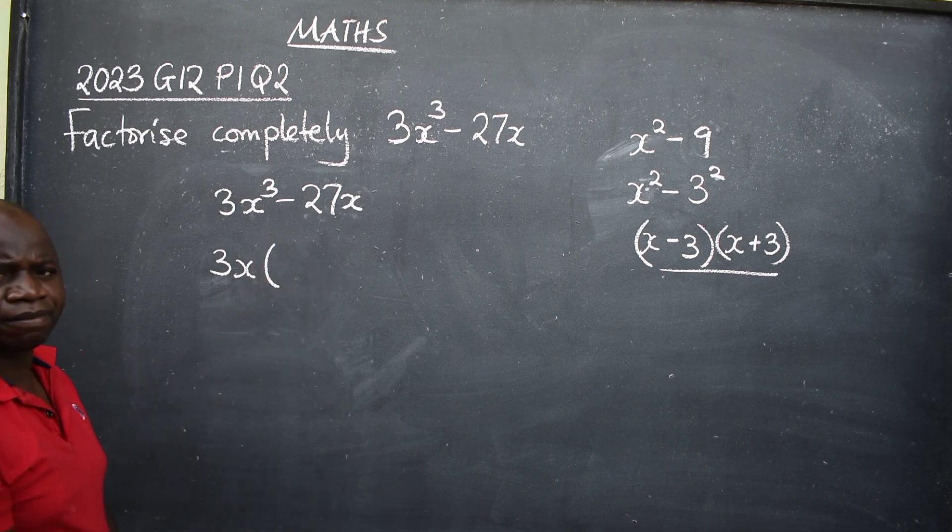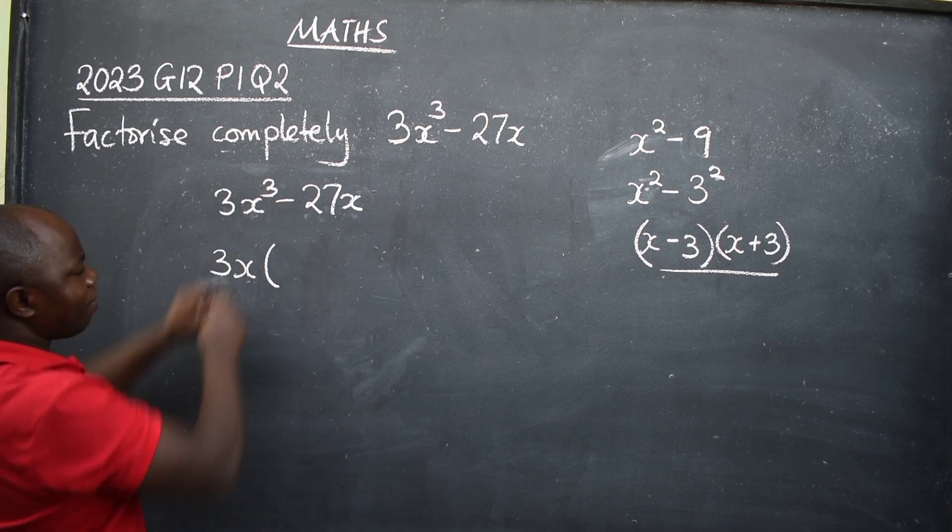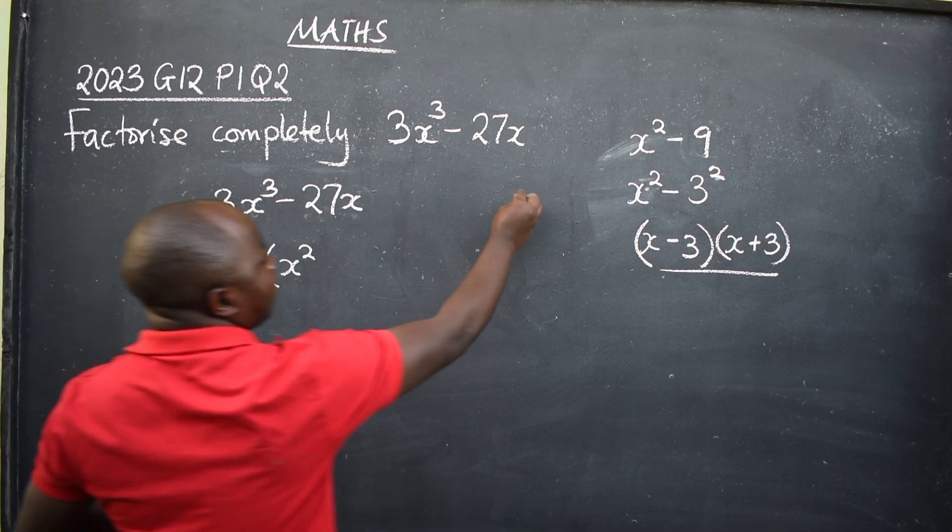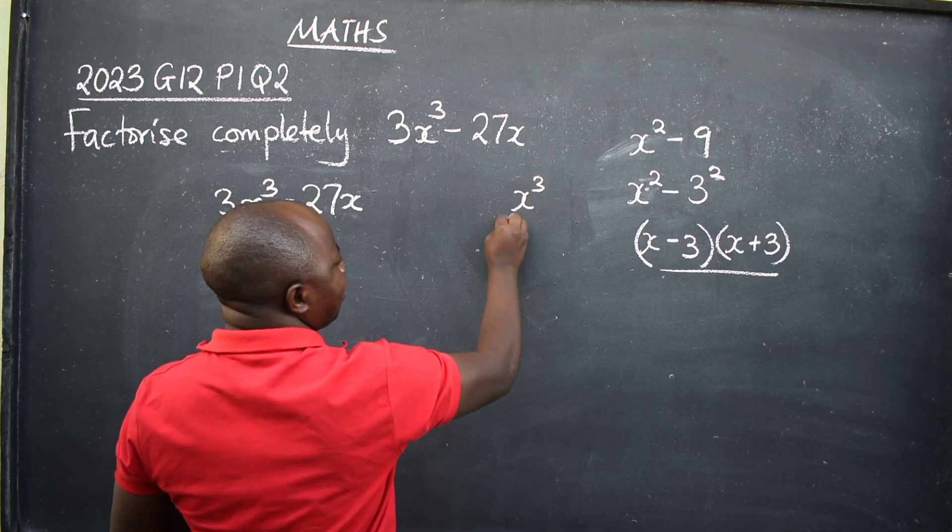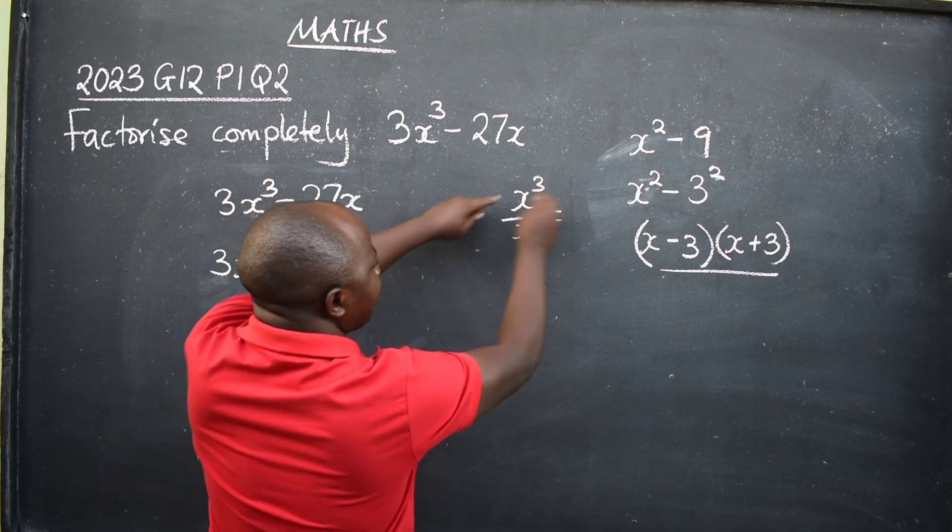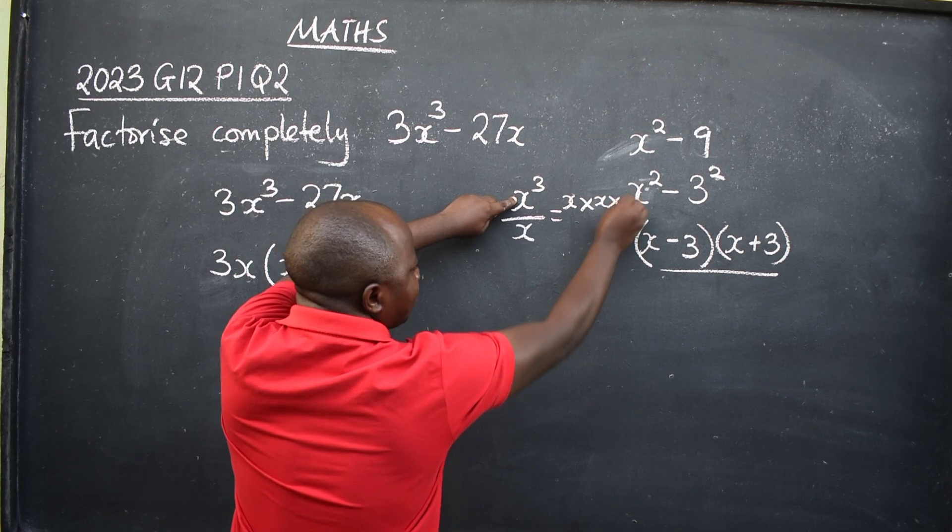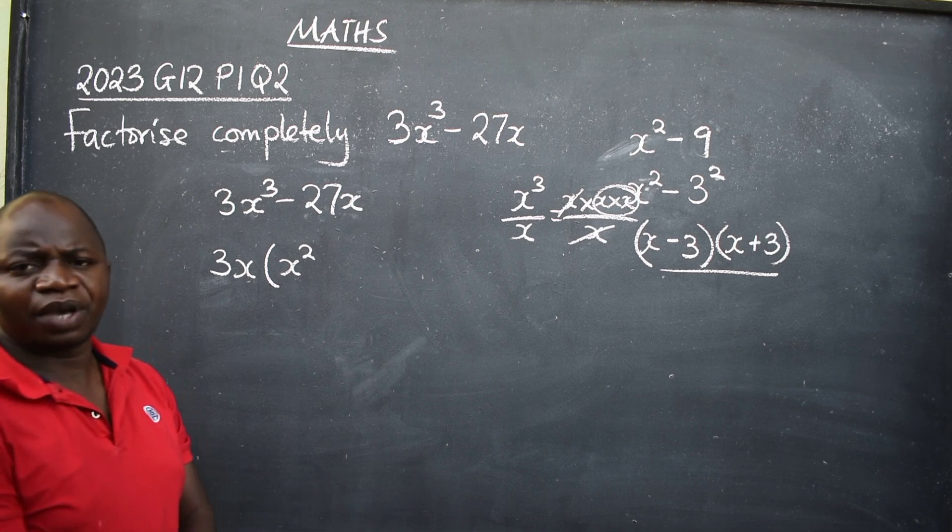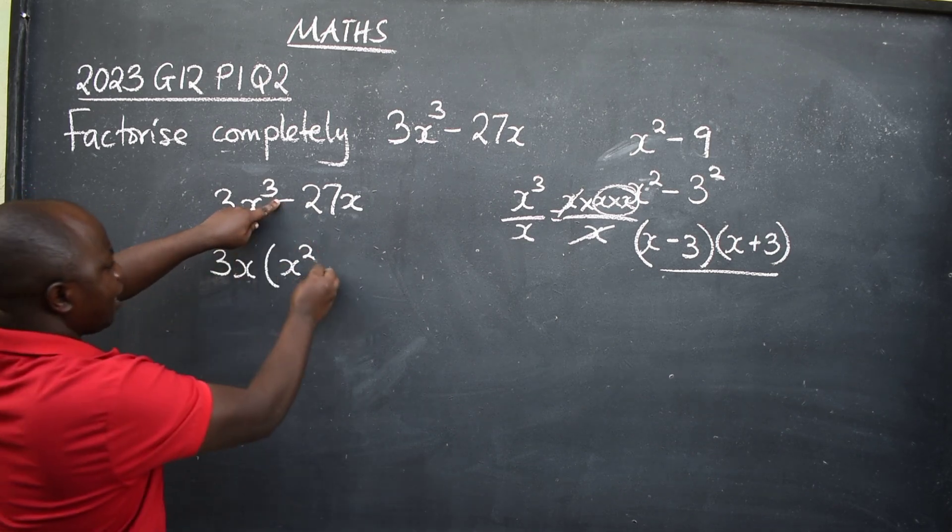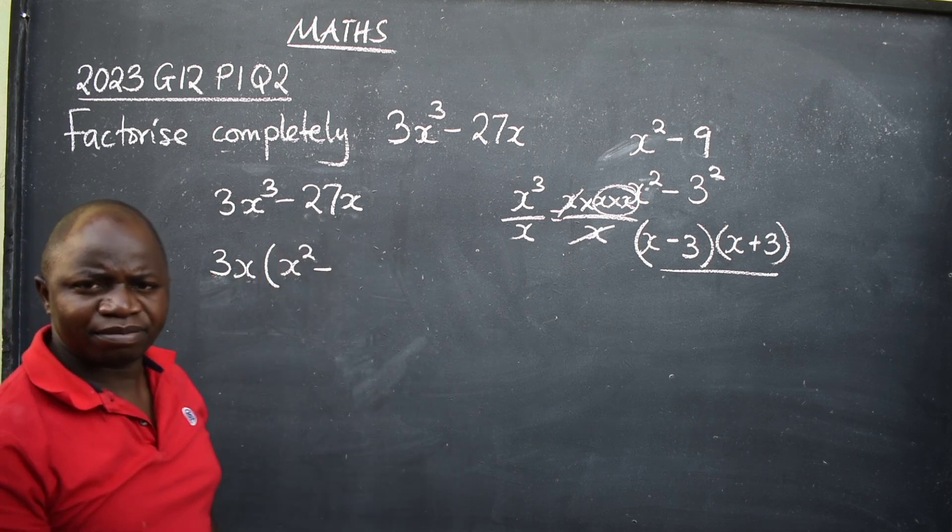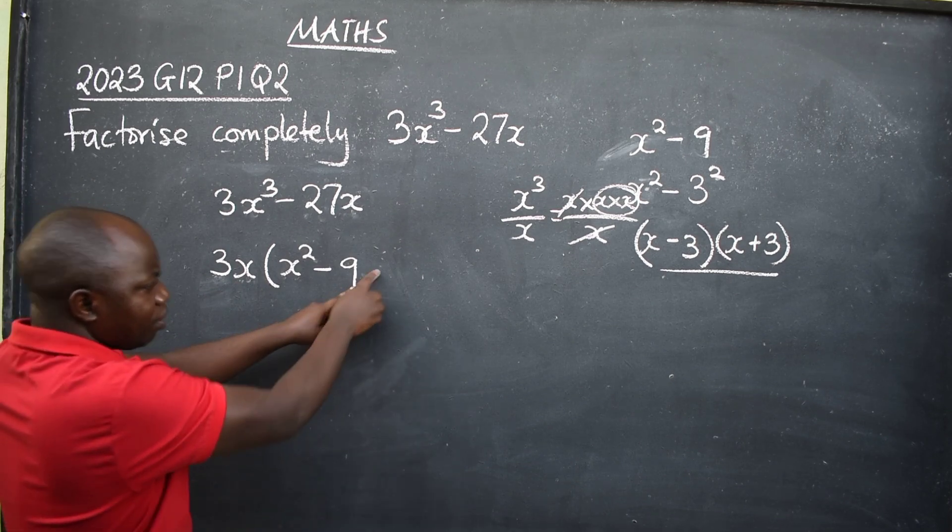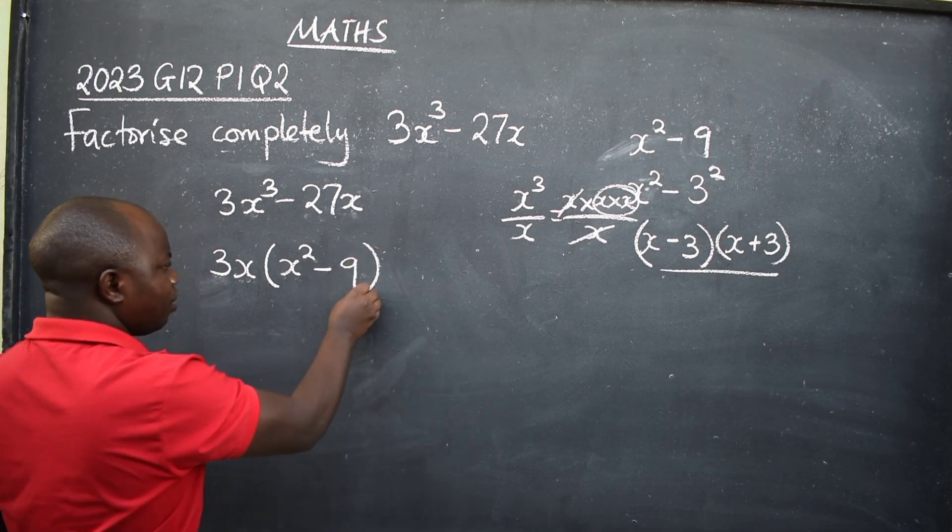You do this: How many 3s are in 3? One. How many x are in x to the power 3? It will be x squared. You are dividing x to the power 3 divided by x, which is x times x times x divided by one x. You cancel one, remaining x times x. Minus, how many 3s are in 27? There are 9 of them. This x has already been used, so you don't write that x again. You close.